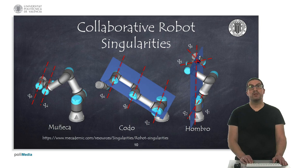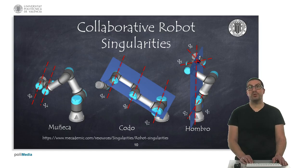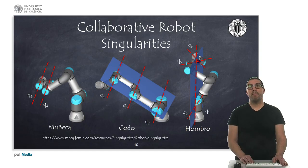In a similar way, collaborative robots also have singularities. In this case, the wrist singularity occurs when axes four and six are parallel, while the elbow singularity occurs when axes two, three and four are contained in the same plane. The shoulder singularity occurs when the point at which axes five and six intersect is contained in the plane formed by axes one and two.